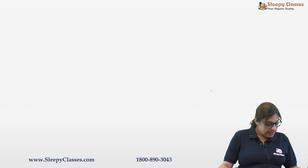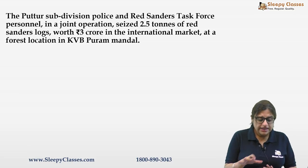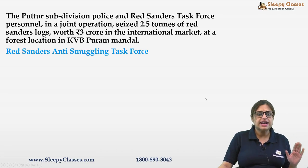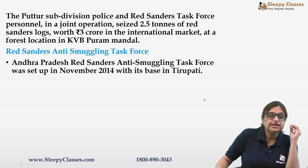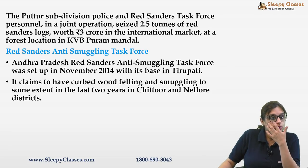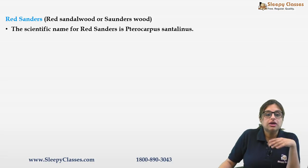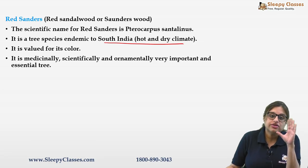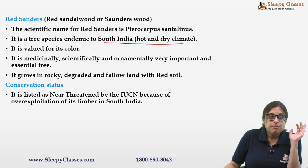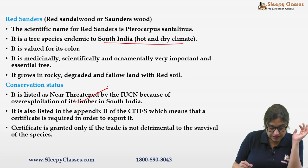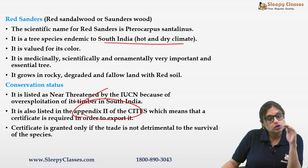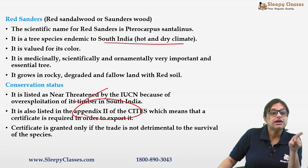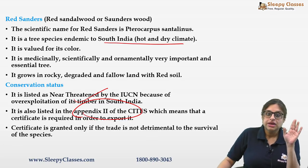Key facts about Red Sanders: endemic to South India, hot and dry climate, valued for its red color for ornamental use. Conservation status: near threatened. CITES Appendix 2 — meaning trade is not absolutely restricted, but a certificate is required. In contrast, white sandalwood is found in tropical areas like Kerala and Karnataka, has a IUCN status of vulnerable, and was in news due to sandalwood spike disease caused by a bacterial parasite (phytoplasma) spread through insect vectors.